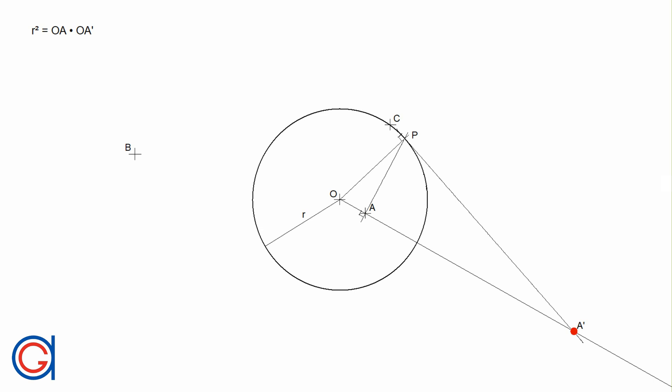And this new point A prime is the inverse of point A, which satisfies the equation R squared is equal to OA times OA prime.